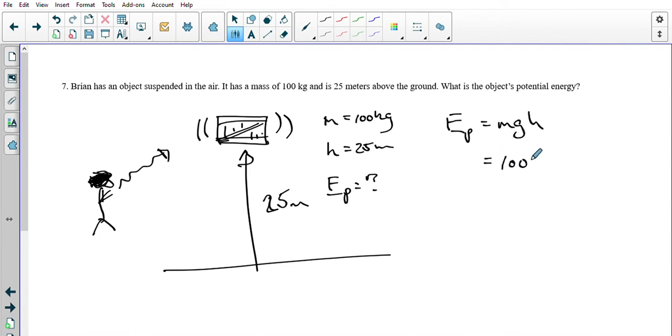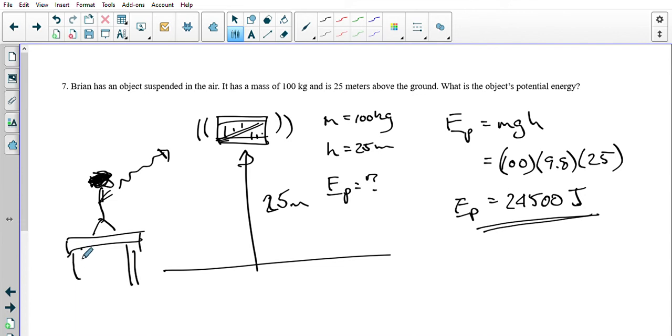So Ep equals mgh. We'll take our 100 kilograms, our 9.8 gravitational field strength, and our height of 25. 100 times 9.8 times 25 equals 24,500, and that's our Ep. But hold on - that's joules because this is energy. Let's put Brian on a table, otherwise he's floating in the air.